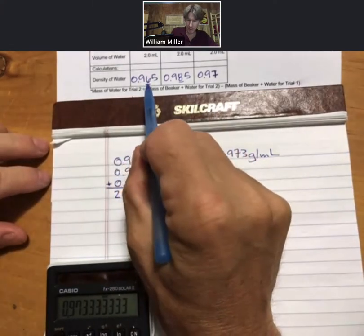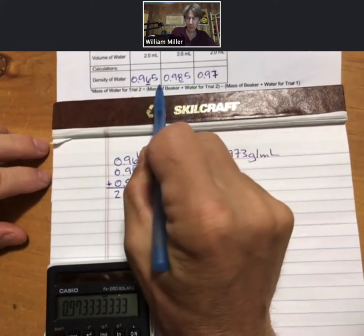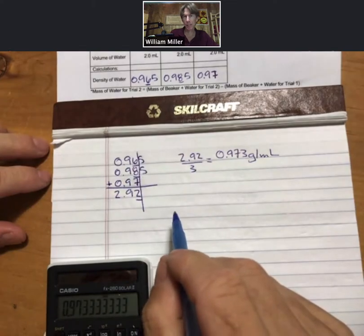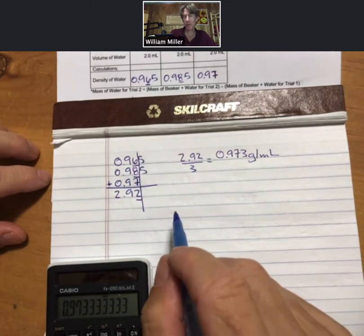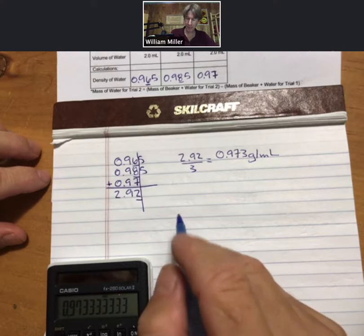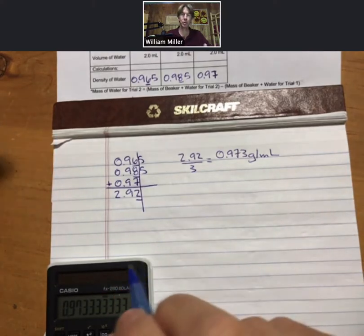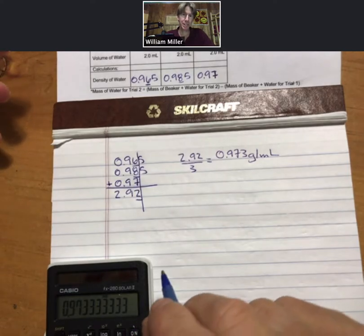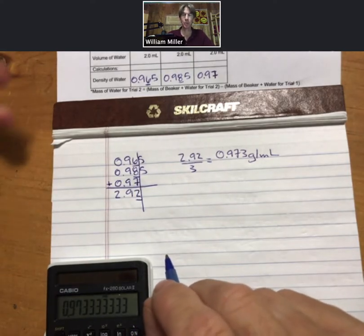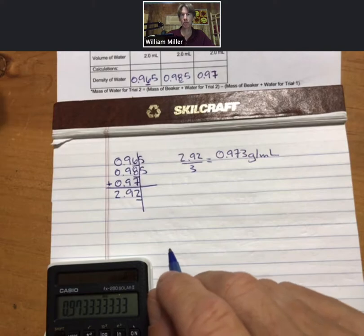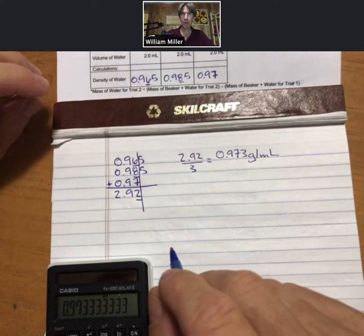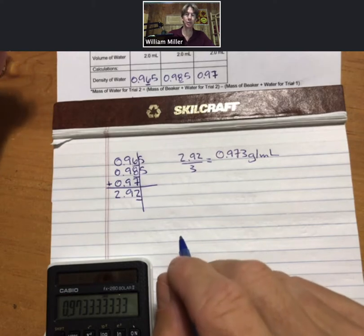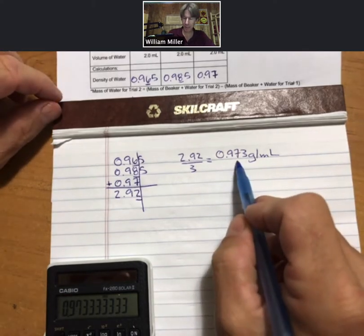But typically what you'll find is if there are only two significant figures in your data points, there should be only two significant figures in your average. And so that's to be looked at because we're going to do the standard deviation next, and when we do the standard deviation you should have agreement between how precise your average is and how precise your standard deviation is.